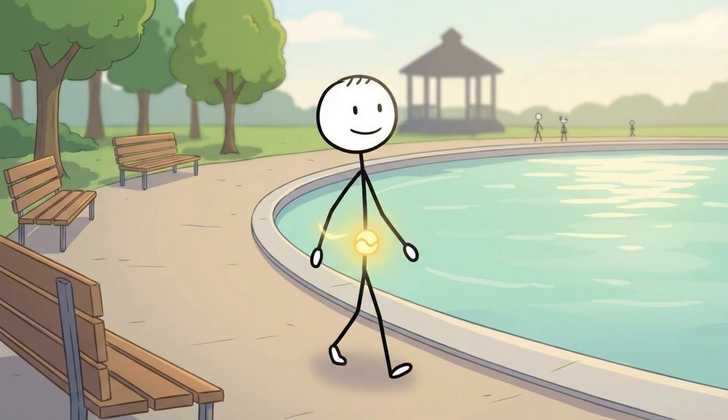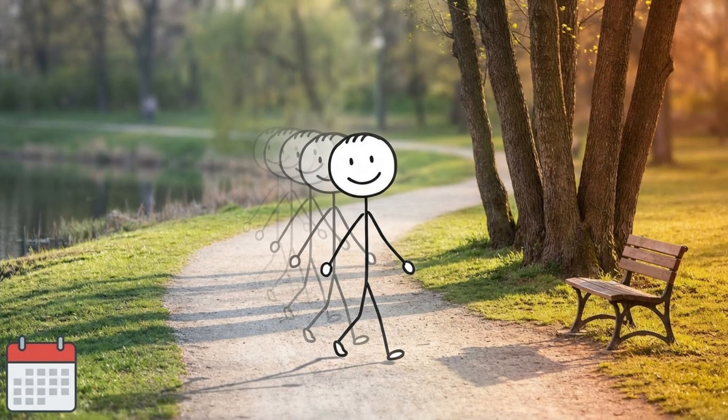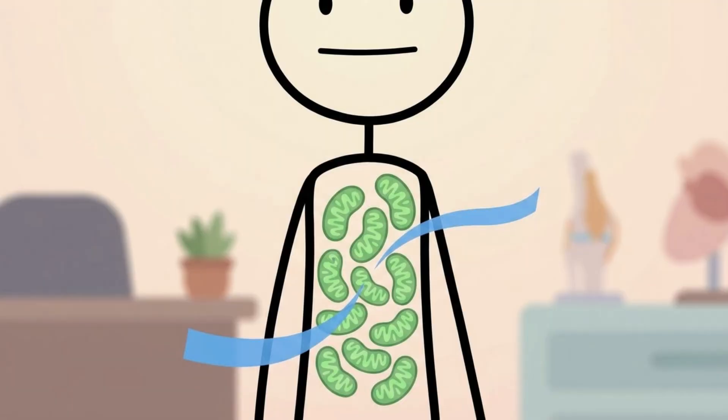When you begin walking, your body immediately looks for the fastest and safest source of energy. That source is almost always glucose pulled from the bloodstream or muscle glycogen. This process is efficient, familiar, and protective. From a biological perspective, burning fat, especially visceral fat, is not the priority yet.